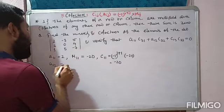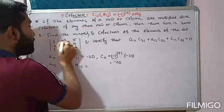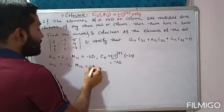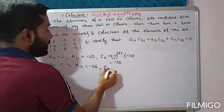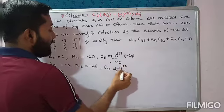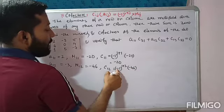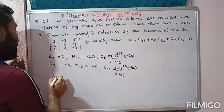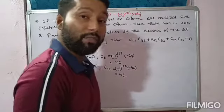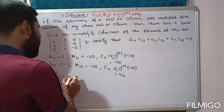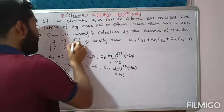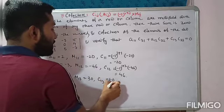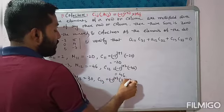For a12 = -3: M12 is obtained by deleting its row and column, giving 6×(-7) - (-4) = -42 - 4 = -46. C12 = (-1)^(1+2) × (-46) = 46. For a13 = 5: M13 gives 30 - 0 = 30. C13 = (-1)^(1+3) × 30 = 30.